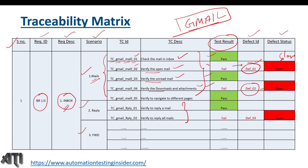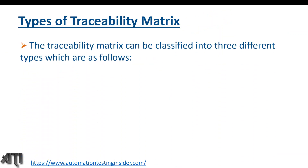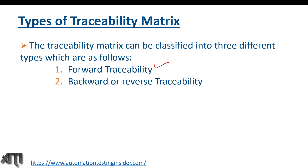This is how we map from requirements to scenarios, to test cases, test results, and defect IDs — a complete tracking of all testing activities. In the next video I'll show a real-time template of the traceability matrix. The traceability matrix can be classified into three types: forward traceability matrix (also called horizontal traceability matrix), backward or reverse traceability matrix (also called vertical traceability matrix), and bi-directional traceability matrix.